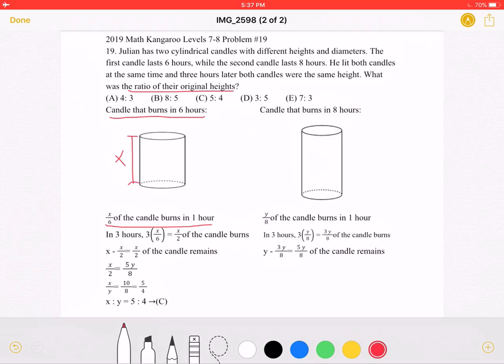In three hours, three times x over 6, which is x over 2, of the candle will burn. Which means that there is x over 2 of the candle remaining.